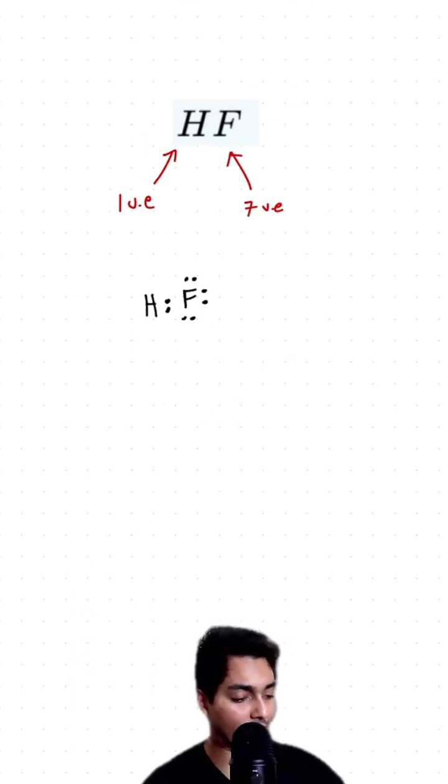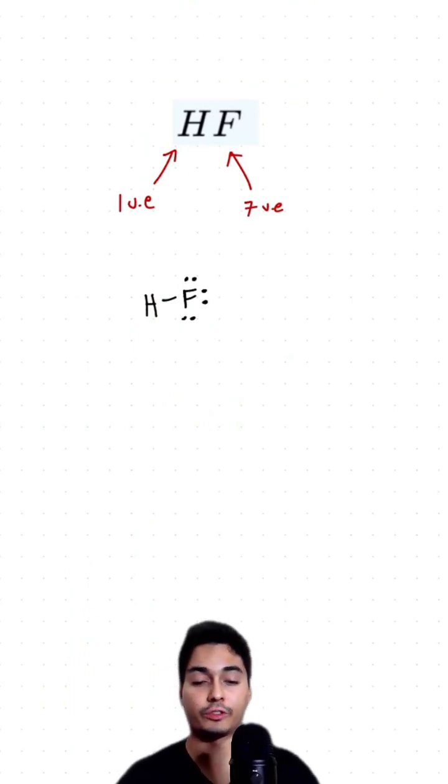So I have a pair of electrons which is now going to be a bond and that is our first Lewis structure.